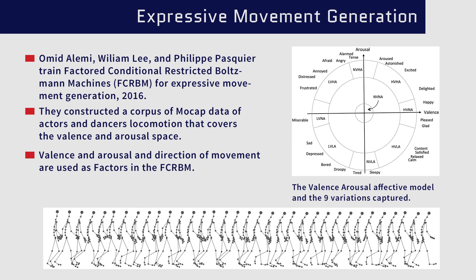We train the factor-constrained-restricted Boltzmann machine for locomotion movements with valence, arousal, and direction of movement as factors. Factors allow us to parametrize the network in order to control some of the dimensions of the generation.